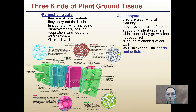We also have collenchyma cells, indicated here. They're also living at maturity and provide much support to the plant's organs where secondary growth has not occurred. They have uneven thickening of the cell wall — some regions are thicker, some are thinner. The wall is thickened with pectin and cellulose, but it is uneven in collenchyma cells.